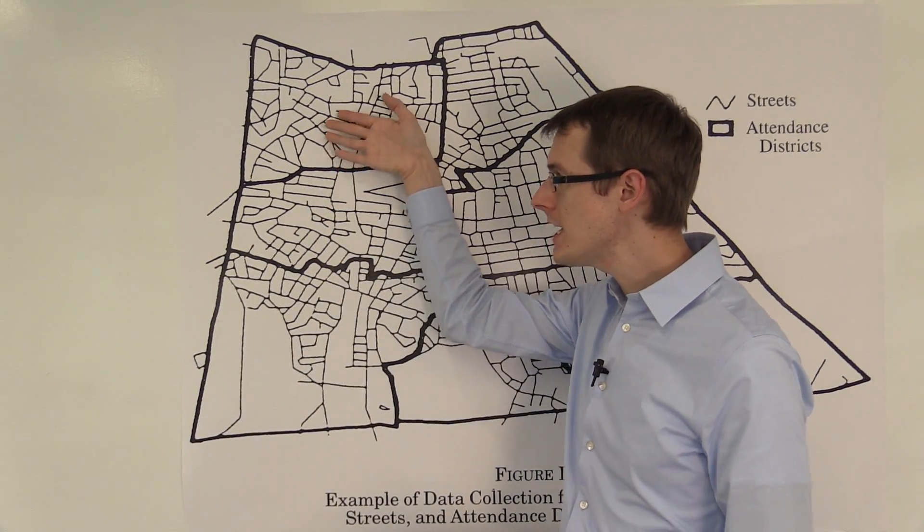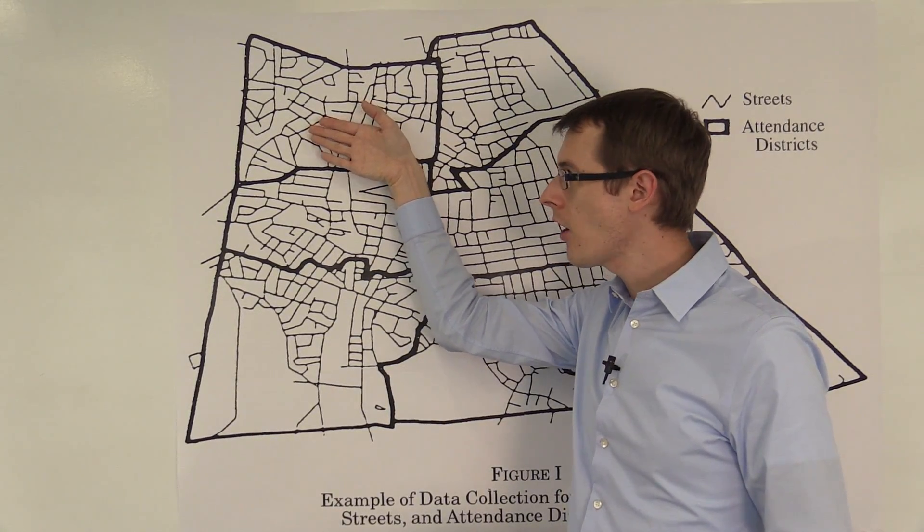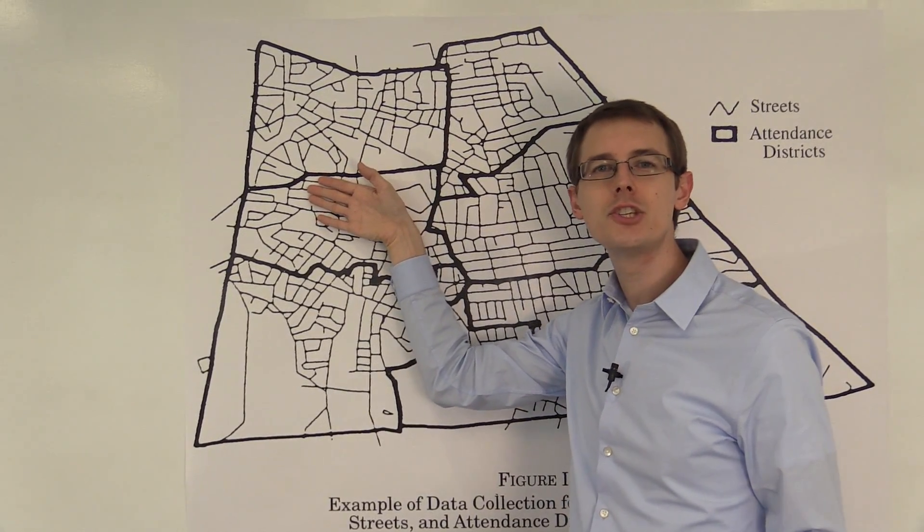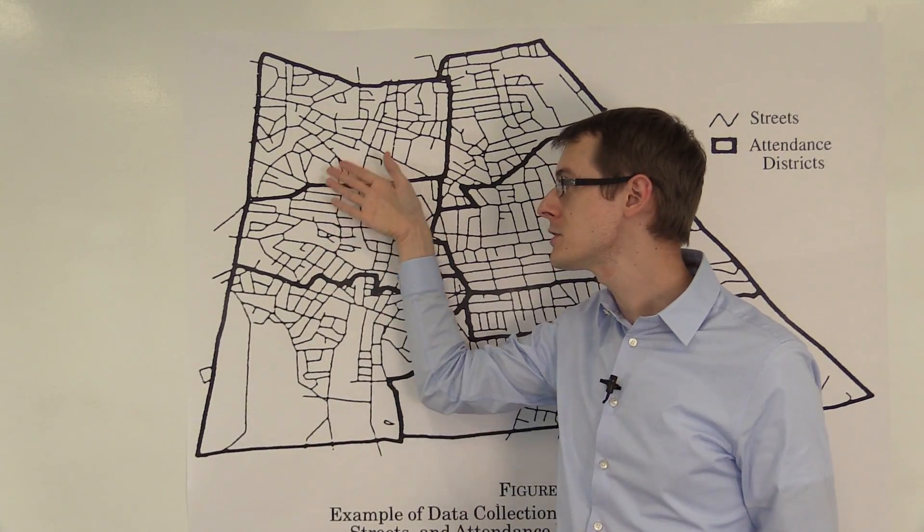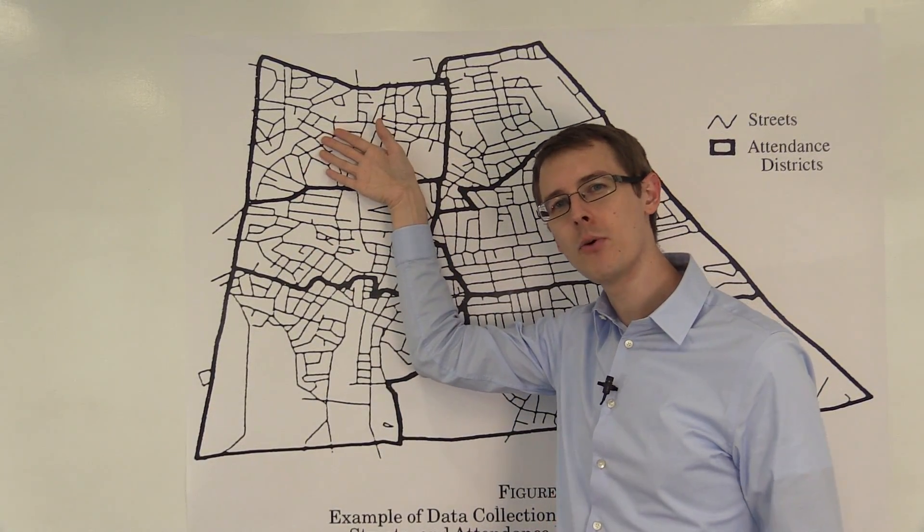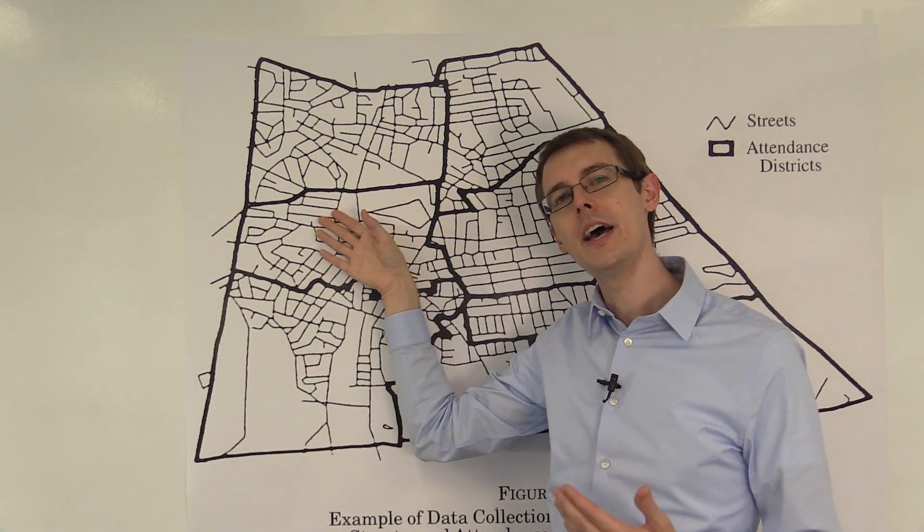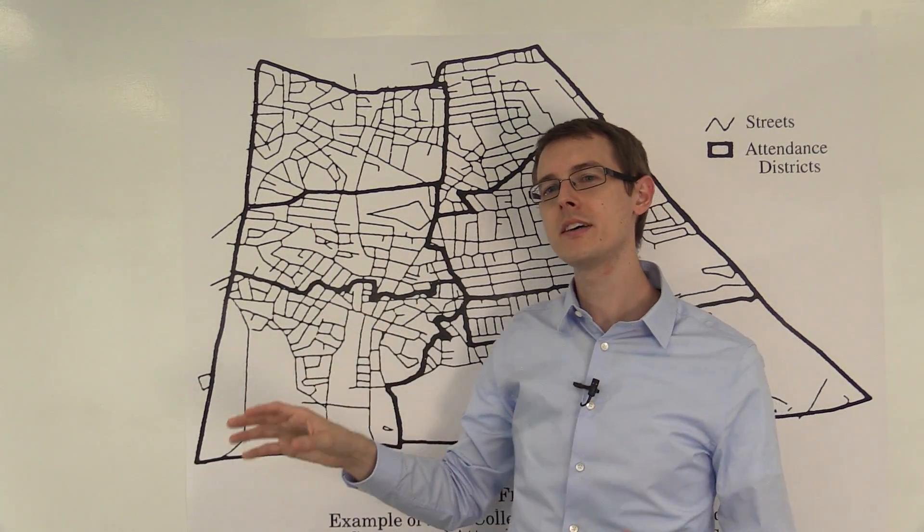It's that houses just north of this border are basically the same as houses just south of the border. So that the only difference between them is that one of them has a high-quality school and one of them has a low-quality school. Everything else is the same.